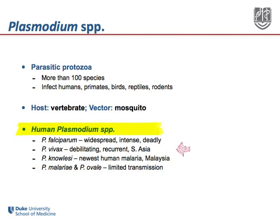Plasmodium vivax is limited mostly to South America and to South and Southeast Asia. It can cause debilitating disease that's also recurrent owing to its ability to remain latent for long periods of time before recurring. Plasmodium knowlesi is the most recently confirmed human malaria, causing endemic infections just 10 years ago in Southeast Asia, principally in Malaysia. And finally, plasmodium malariae and plasmodium ovale have limited ranges and intensity of transmission.